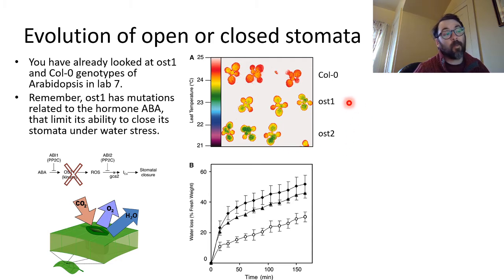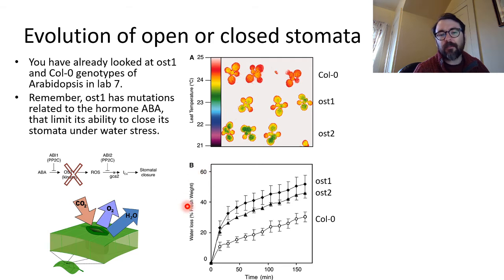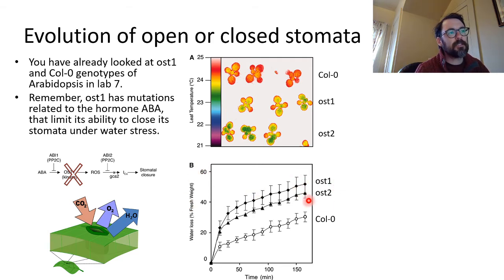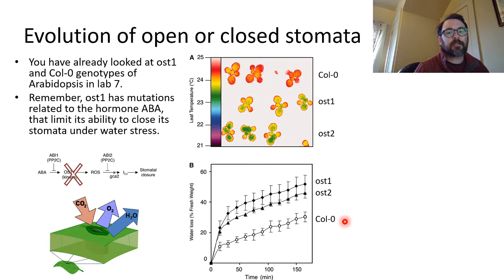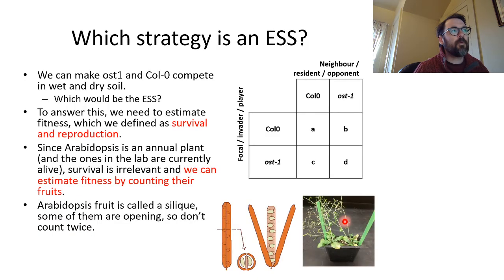We're looking at OST1. If you look at water loss over time as you allow the plants to draw down, you can see that the two OST mutants lose more and more water than Columbia because they simply can't close their stomata.